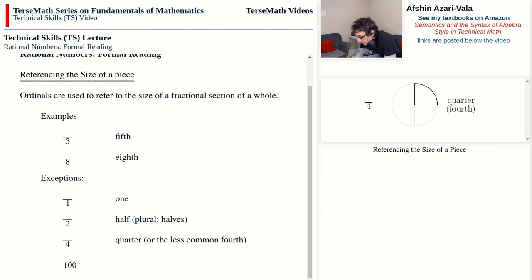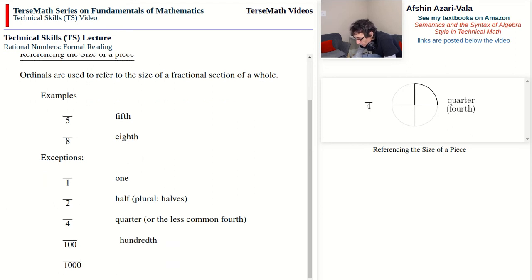If the denominator is one hundred, it's much more common to refer to the size of a piece as a hundredth. If your denominator is one thousand, we refer to the size of a piece as a thousandth.